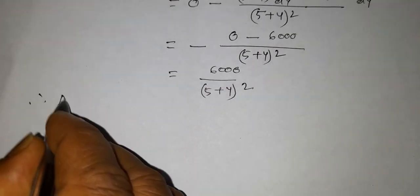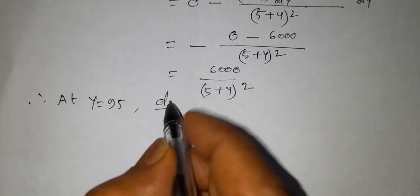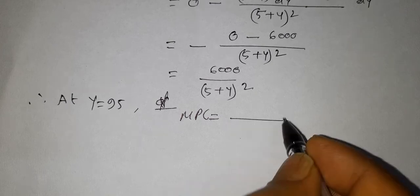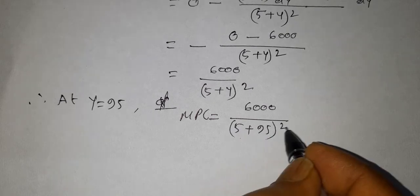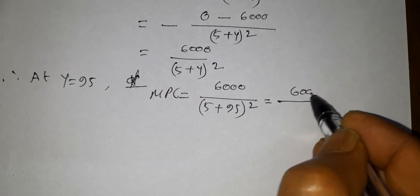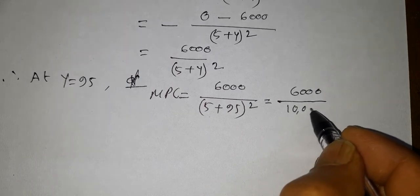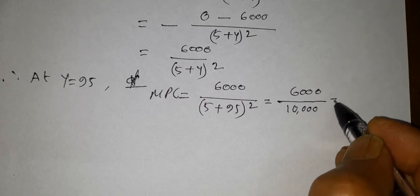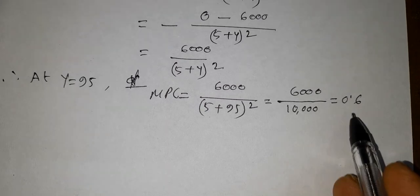Therefore at y equals 95, MPC is equal to 6000 divided by (5 plus 95) whole square, which equals 6000 divided by 100 squared, and 100 squared is 10,000. This gives MPC equal to 0.6. So MPC is found to be 0.6.